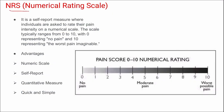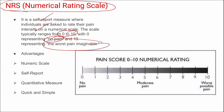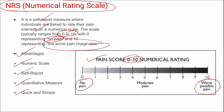Next is the Numerical Rating Scale (NRS) — a self-reported measure to rate pain intensity on a numerical scale between 0 to 10, where 0 indicates no pain and 10 indicates the worst pain imaginable. Its advantages are that it is numeric, self-reported, measures pain quantitatively, and is very quick and simple to administer.